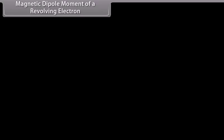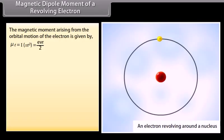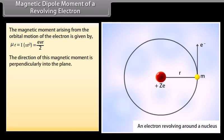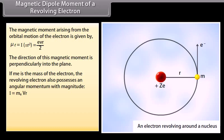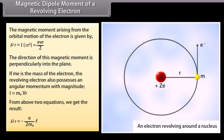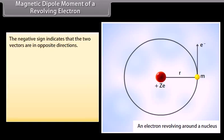Magnetic dipole moment of a revolving electron: the magnetic moment arising from the orbital motion of the electron is given by eVR/2. The direction of this magnetic moment is perpendicularly into the plane. If me is the mass of the electron, the revolving electron also possesses an angular momentum L. From the two equations, μL = −(e/2me) × L. The negative sign indicates that the two vectors are in opposite directions.